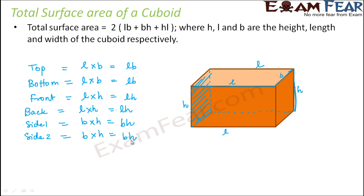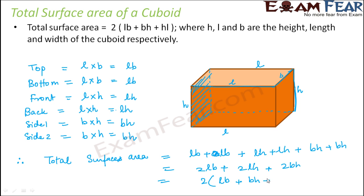These are the areas for all the six surfaces which make this cuboid. Therefore, the total surface area of this cuboid would be the sum of the areas of these surfaces. That is equal to LB plus LB plus LH plus LH plus BH plus BH. This can be written as 2LB plus 2LH plus 2BH. 2 is a common factor, so let's take it out. This is 2 into LB plus BH plus LH. So this is the total surface area of a cuboid.